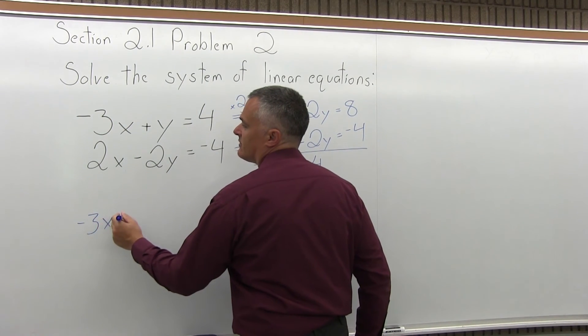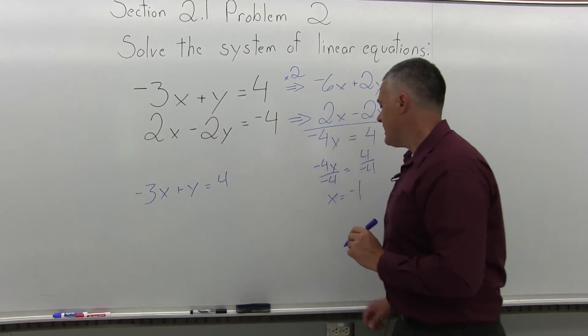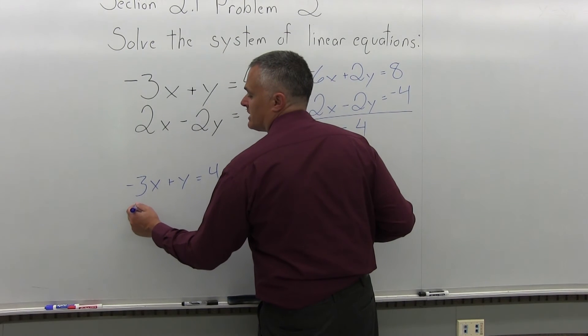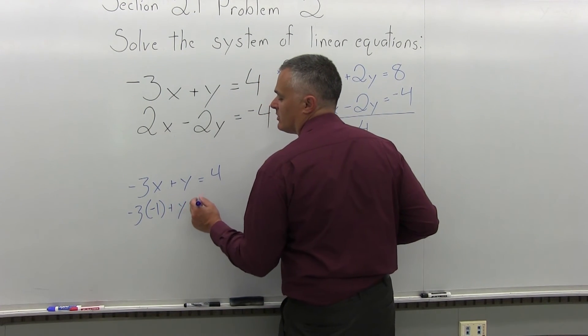So the top equation is negative 3x plus y equals 4. And if x is negative 1, negative 3x becomes negative 3 times negative 1 plus y equals 4.